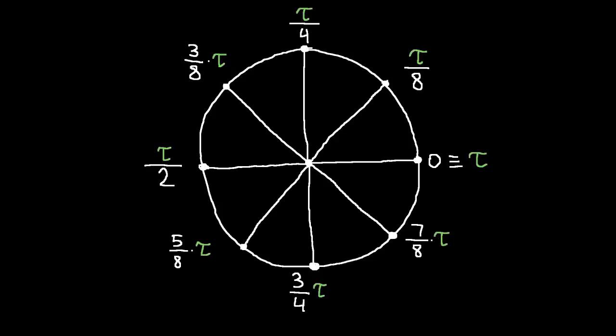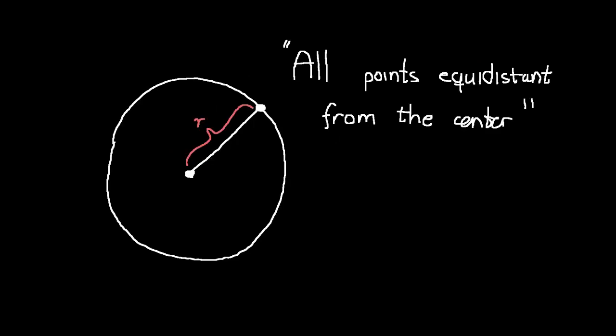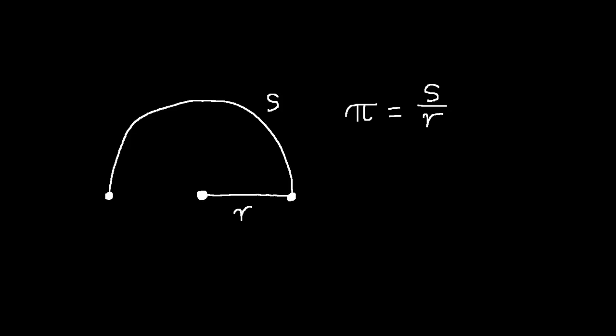Every angle in the unit circle is just the fraction of the circumference times tau. There is now less to memorize, it is easier to learn, and after all, the circle is defined in terms of the radius, so surely it's more natural to use the ratio of the circumference to the radius than to the diameter, right? Well, I'm not convinced.